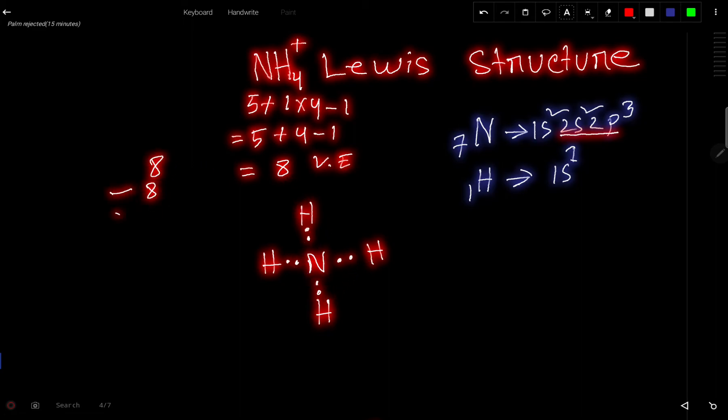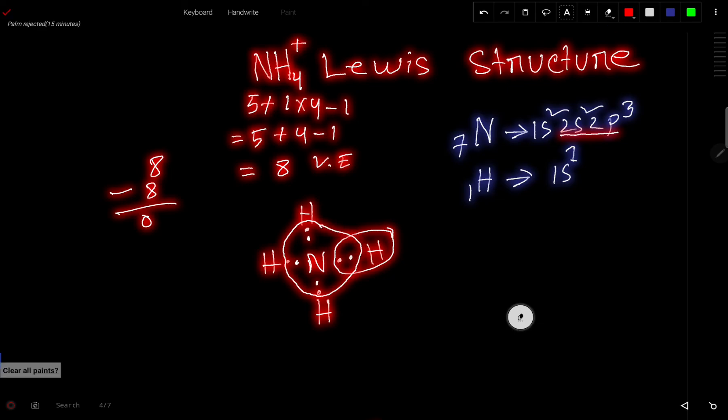So now check for octet and duet. These valence electrons are shared by both, so this hydrogen has two valence electrons, and this hydrogen also has two valence electrons, this hydrogen also has two valence electrons. And this nitrogen has completed its octet, right? So this is the Lewis structure.